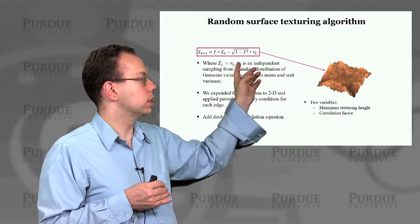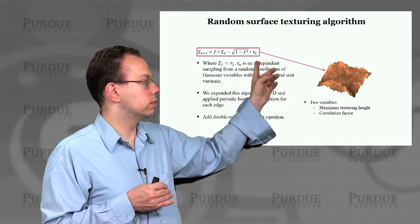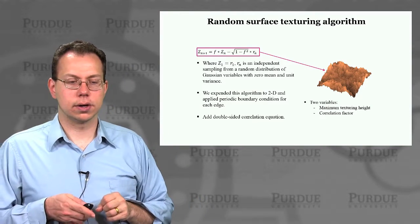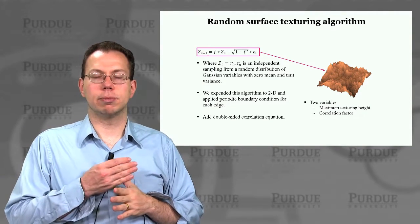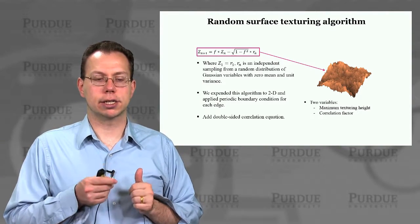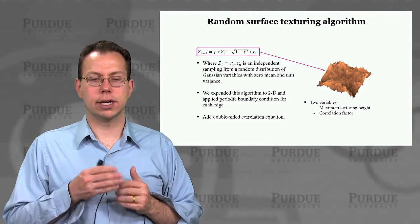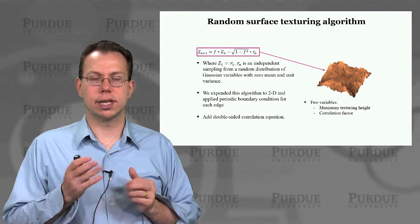And then that random component goes like 1 minus f squared to the 1 half power times the random value. You can do that both in 1D and 2D textures, and you can create double side correlation to make sure that it's fully periodic.